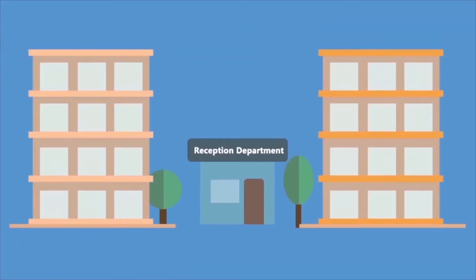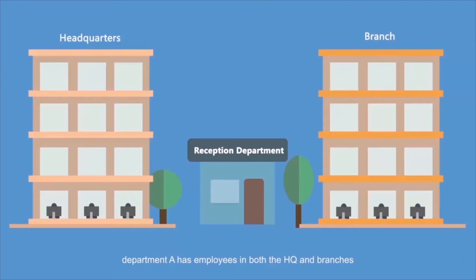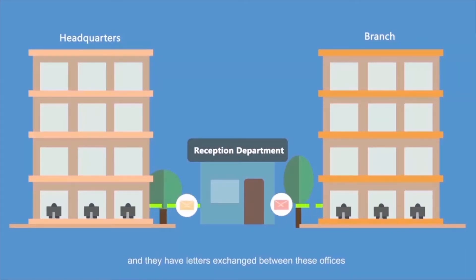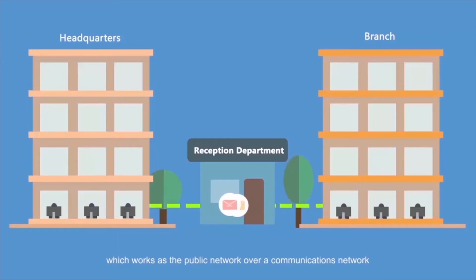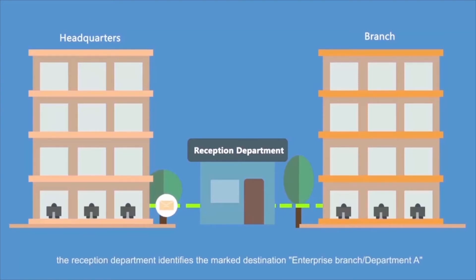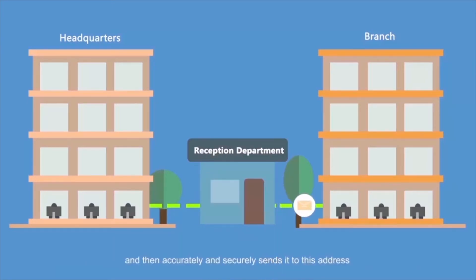Let's see an example. An enterprise HQ and branches are located in different areas. Department A has employees in both the HQ and the branches, and they have letters exchanged between these offices. Letter exchange needs the help of a department called the reception room, which works as a public communications network. When Department A sends a letter, the reception department identifies the marked destination — enterprise branch and Department A — and then accurately and securely sends it to that address.